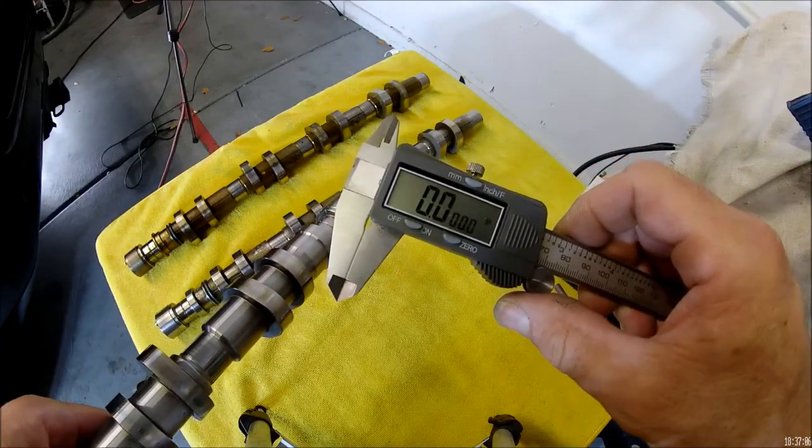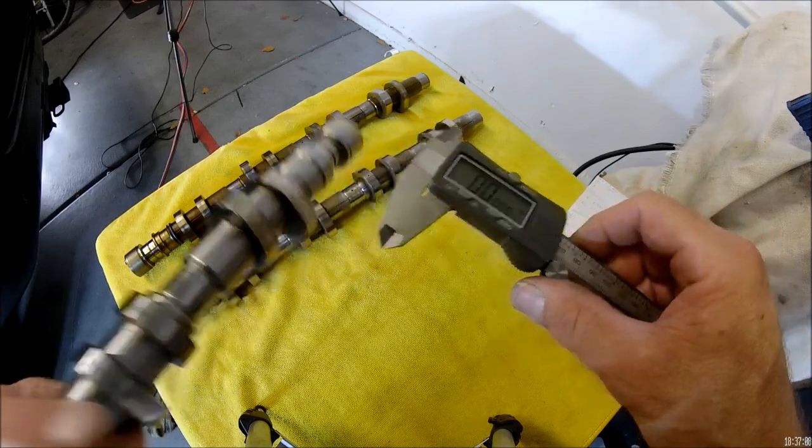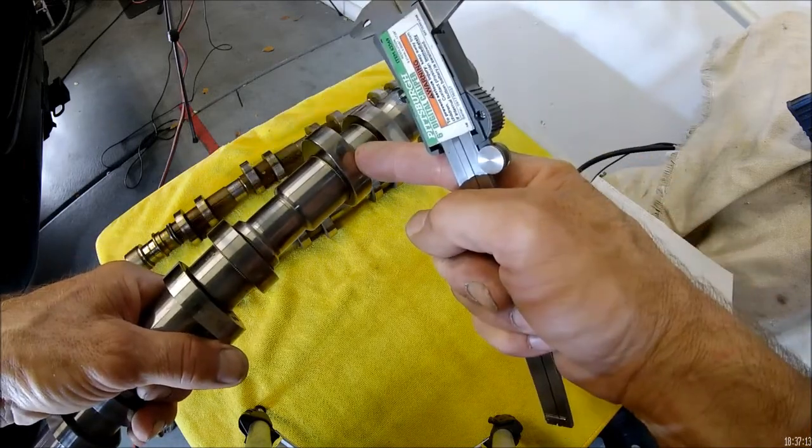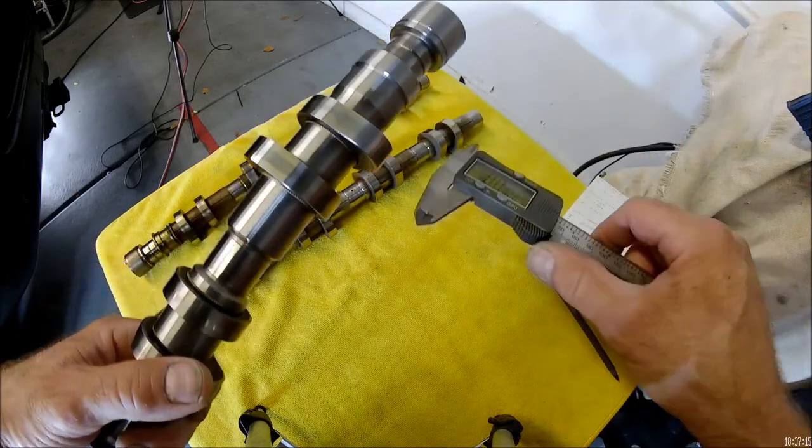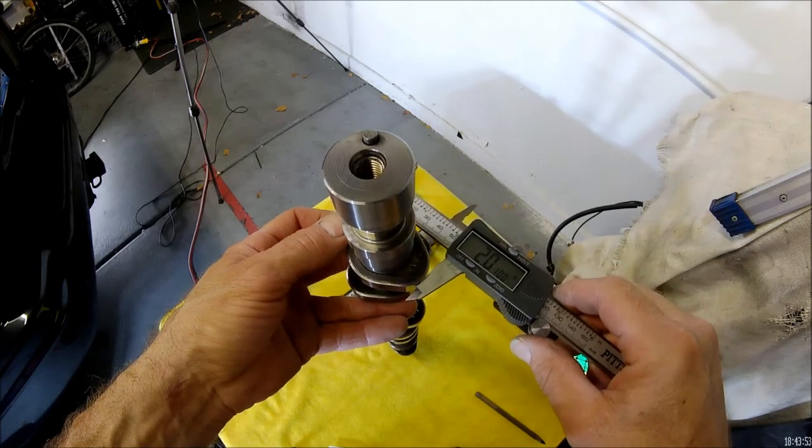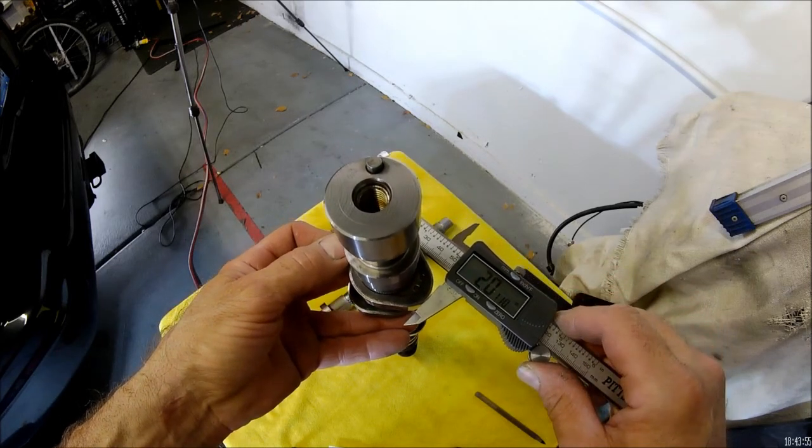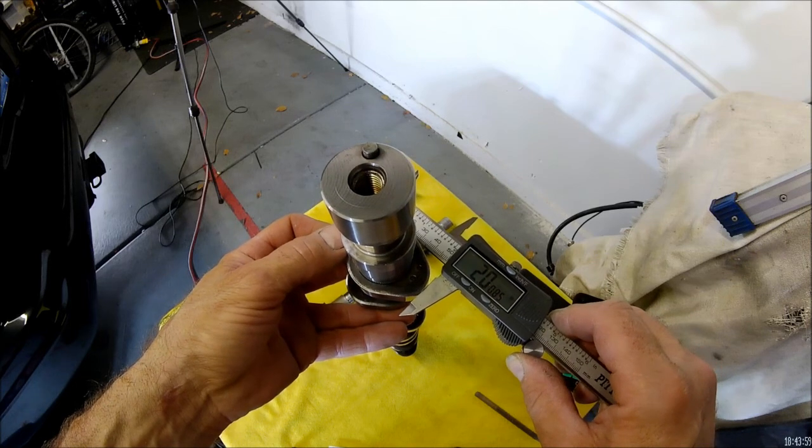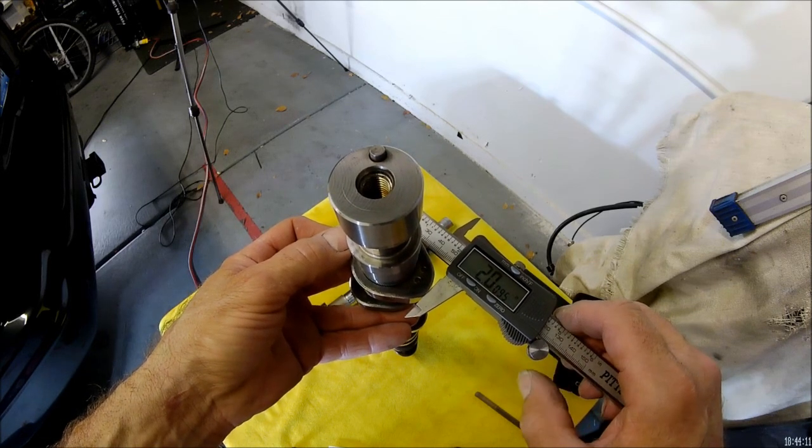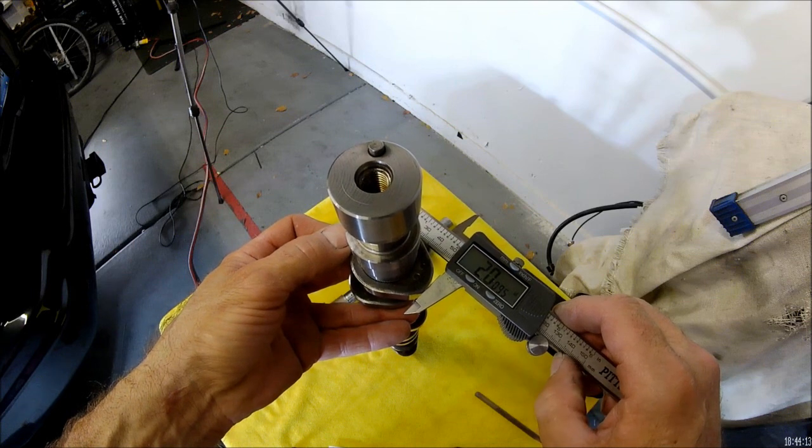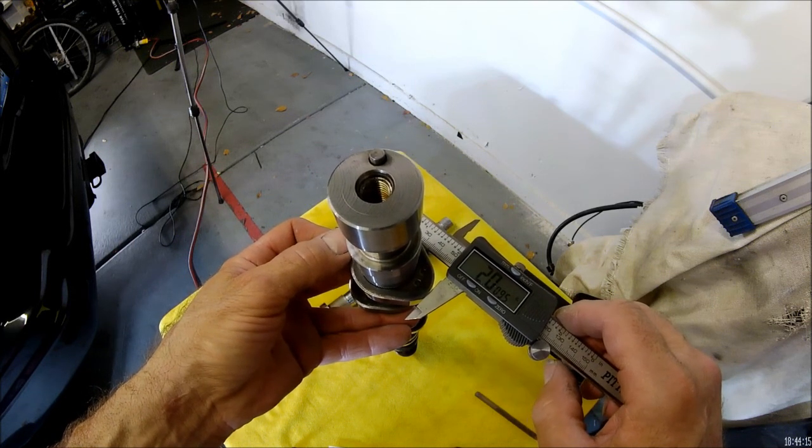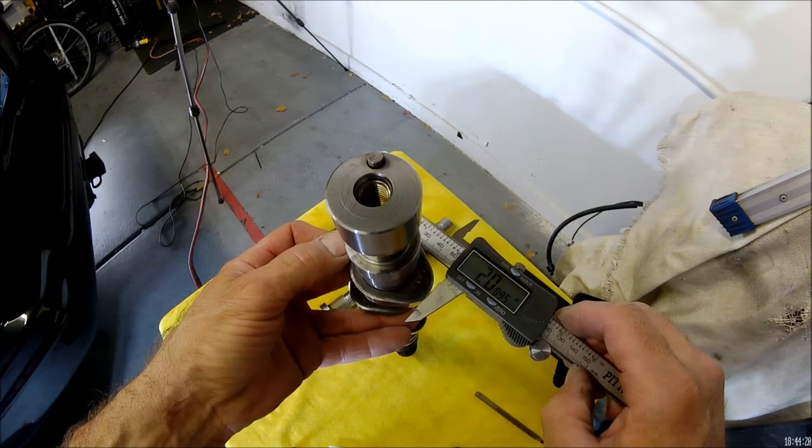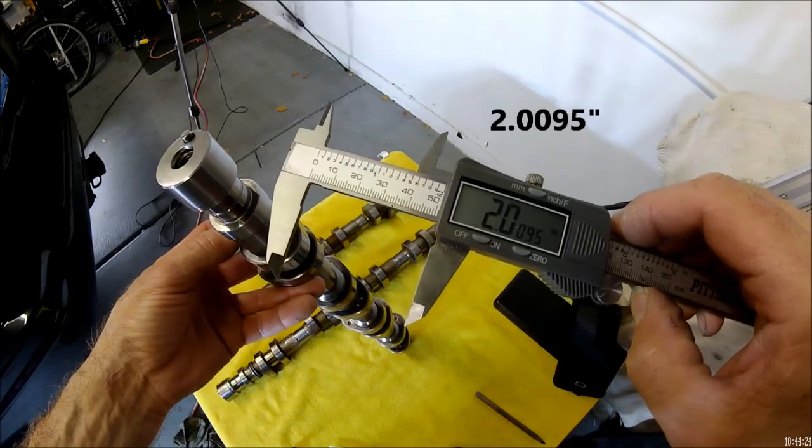Okay, I got the dial caliper here, set at inches. This is the intake lobe of this, and this is the exhaust lobe. Okay, right there. You want to make sure you're getting it right on that very peak there. Go ahead and record that.